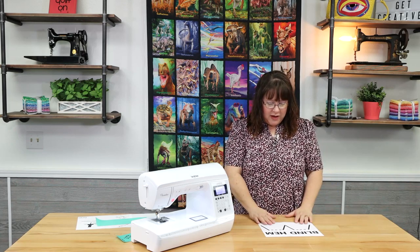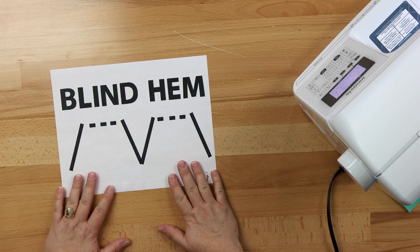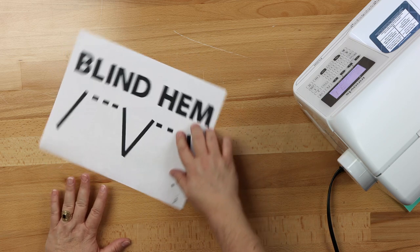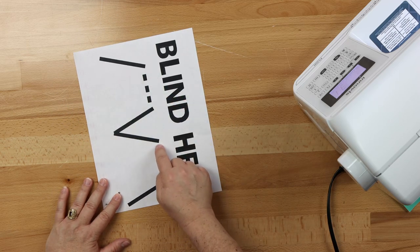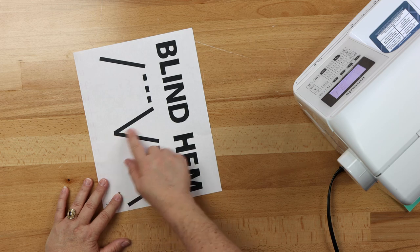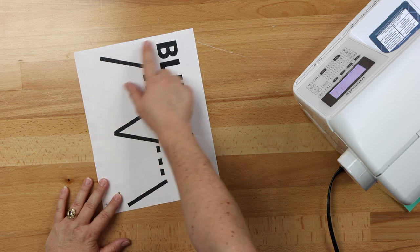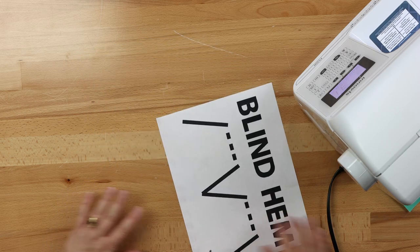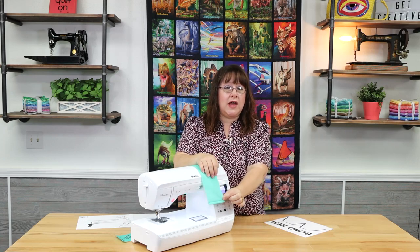Okay, so the blind hem is something that is formed by your fabric being along the one edge. You have these stitches formed and then it leaps over and grabs a fold and comes back. Stitches form, leaps over, grabs the fold and comes back. So that when you're all said and done, we end up with this little blind hem.